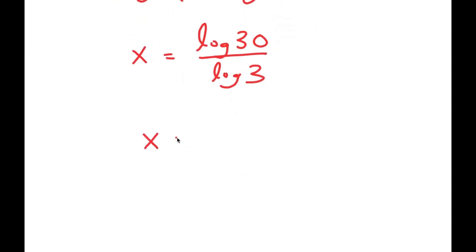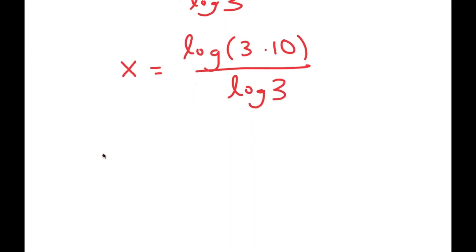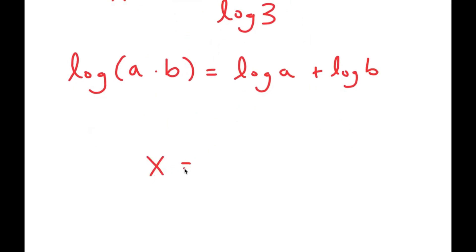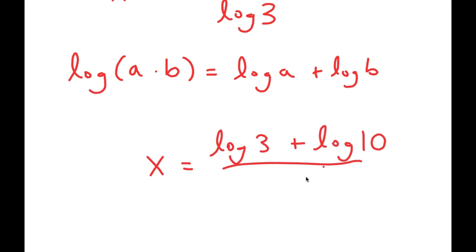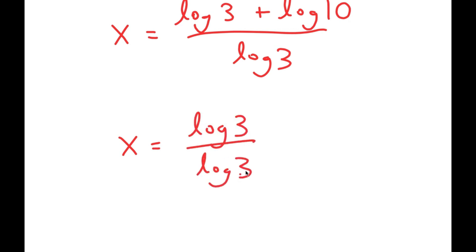Now, log 30 — I'm going to rewrite that as log of 3 times 10. And if I have something in the form log of a times b, this is equal to log a plus log b. So log of 3 times 10 is equal to log 3 plus log 10. Now I have this over log 3.